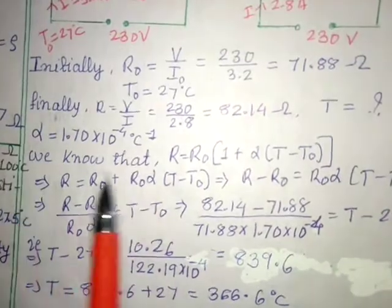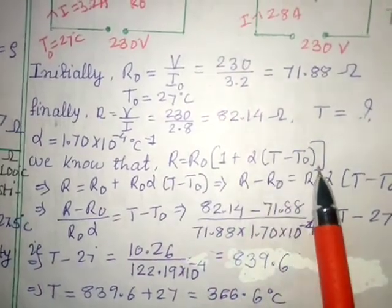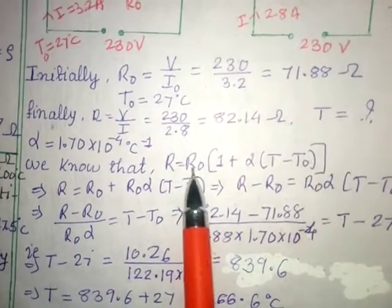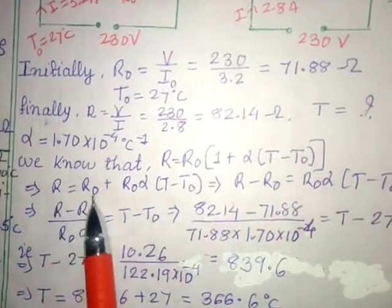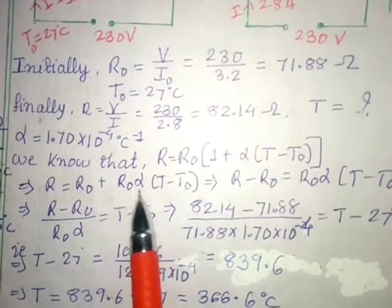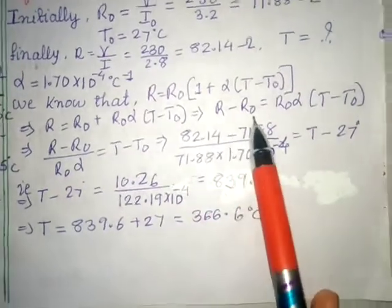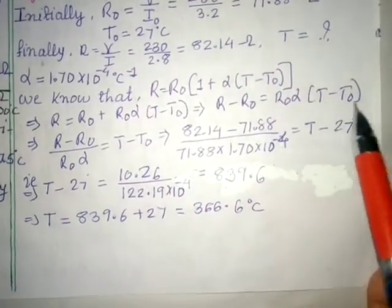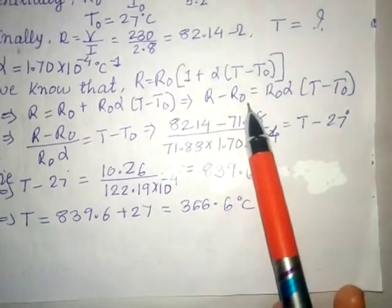Alpha is given to you. Now we know that R equals R0 times 1 plus alpha times T minus T0. Just little simplification once again. Multiply inside and transfer. So R equals R0 plus R0 alpha times T minus T0. Transfer R0 to get R minus R0 equals R0 alpha times T minus T0. Transfer R0 alpha to the denominator.